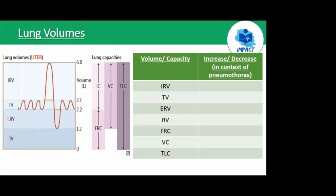The right-hand column is a bit of a trick question — how would these volumes or capacities change in the context of a pneumothorax? With a pneumothorax, they all decrease, except for tidal volume, which could remain normal depending on the size of the pneumothorax and comorbidities. The degree of the pneumothorax depends on the overall size of the hole within the thorax.